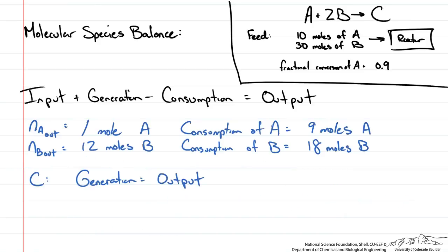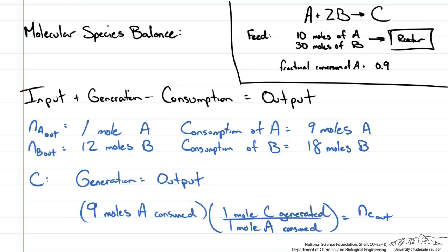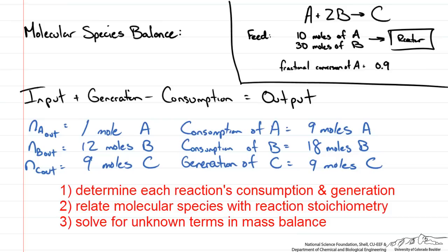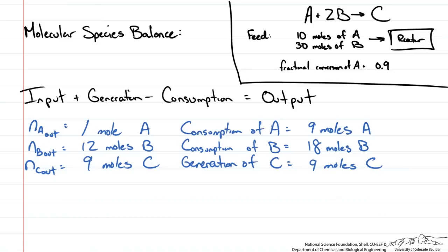Lastly we do the balance for C. There is no input and no consumption, so generation equals output. Using stoichiometry from the reaction, there is a ratio of 1 mole of C generated per mole of A consumed, giving NC out equal to 9 moles. The take-home message using molecular species balances is that we need to use stoichiometric ratios for the consumption and generation terms, and we need to determine a consumption or generation term for each reaction involved.